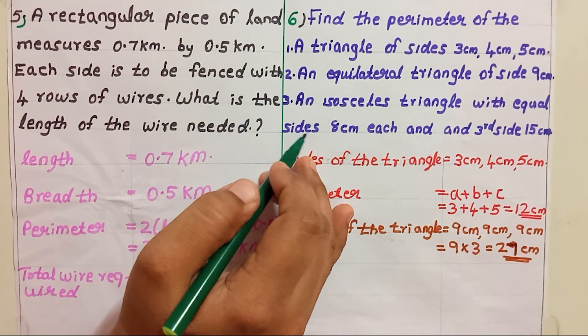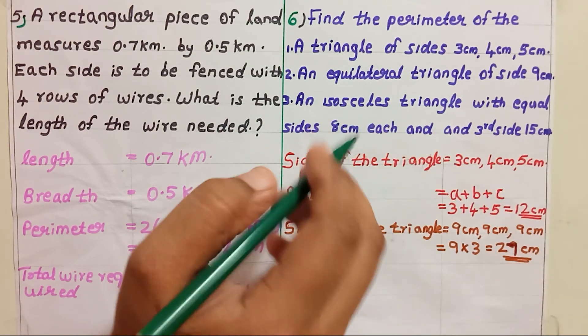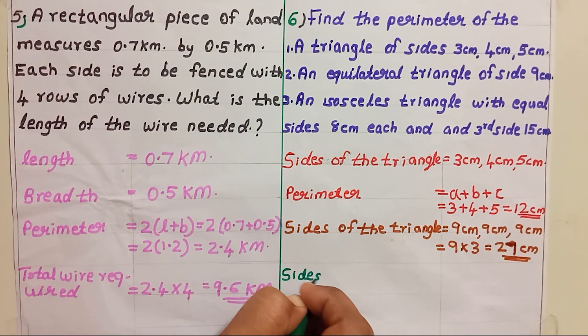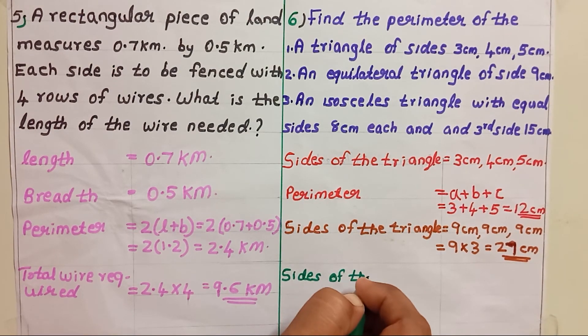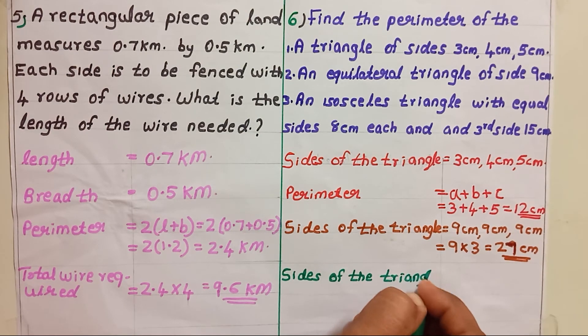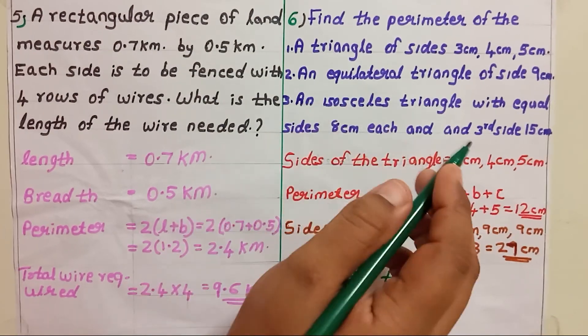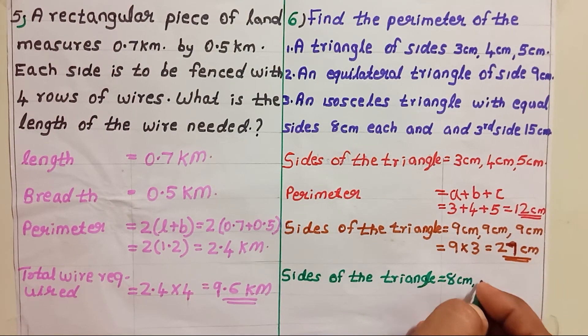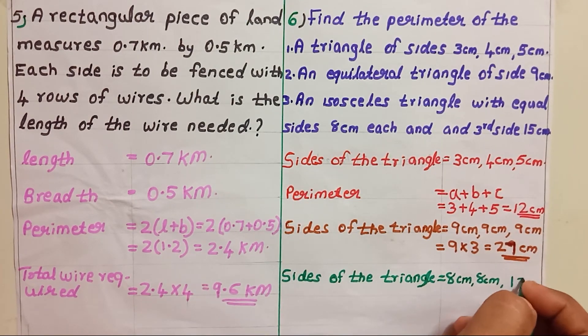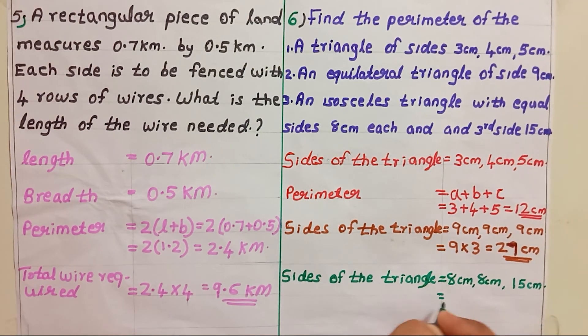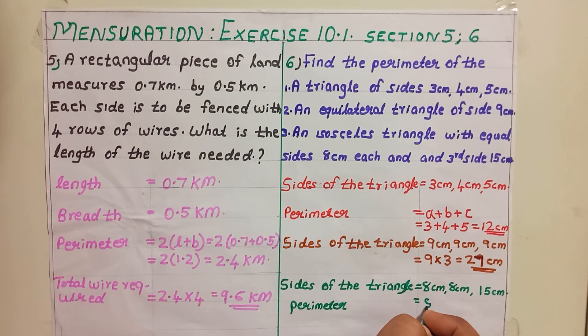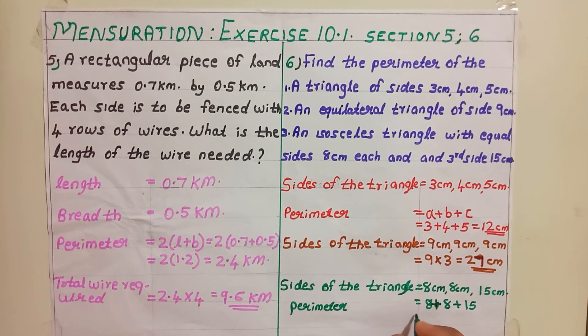Third question. An isosceles triangle with equal sides 8 centimeter each and the third side 15 centimeter. So, for this problem, we can write down that sides of the triangle equal to... See, two sides are equal for an isosceles triangle. That means 8 centimeter, 8 centimeter and the third side is 15 centimeter. So, to get the perimeter, Perimeter equal to 8 centimeter plus 8 centimeter plus 15 centimeter. That is 31 centimeter.